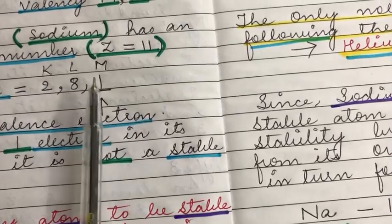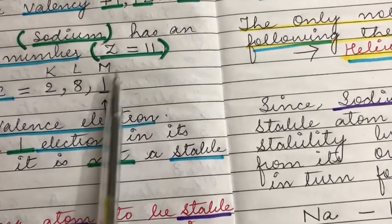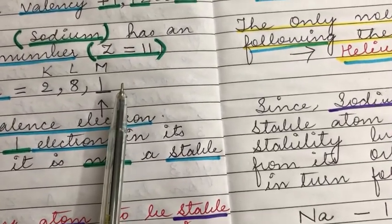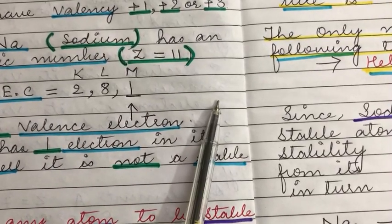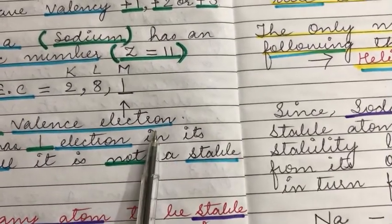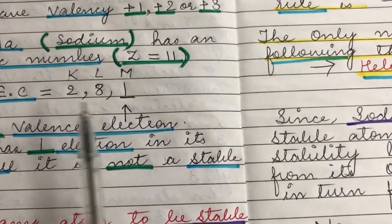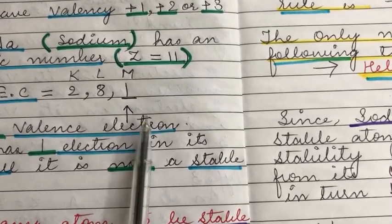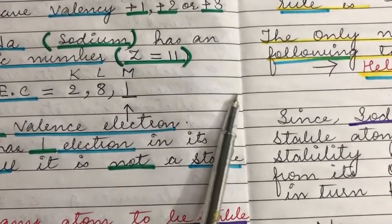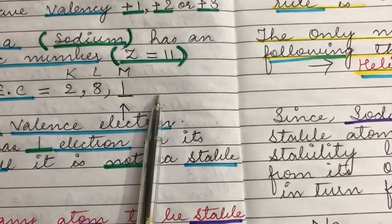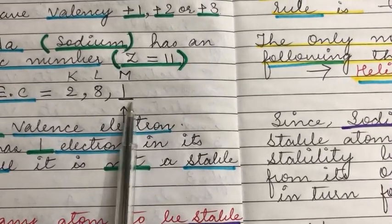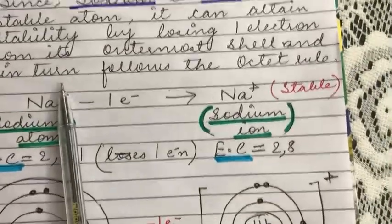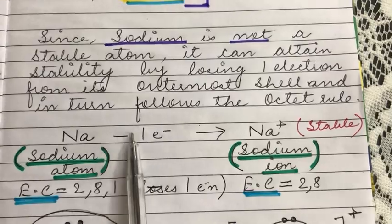Some students are confused — couldn't sodium gain seven electrons to also have eight electrons in the M shell? But sodium, or any other metal with one, two, or three electrons in the outermost shell, does not gain electrons. The reason is simple: the energy involved in gaining seven electrons would be much more compared to losing just one electron.